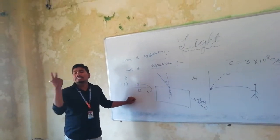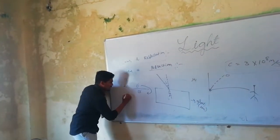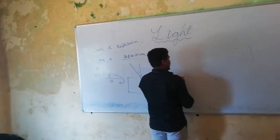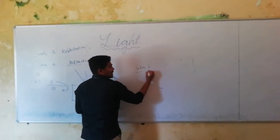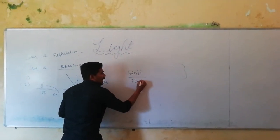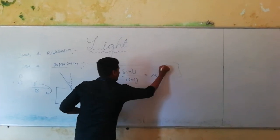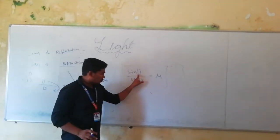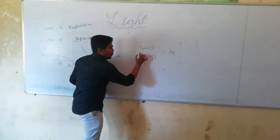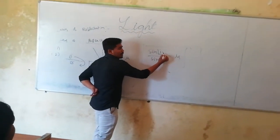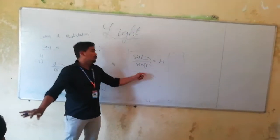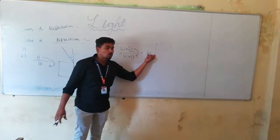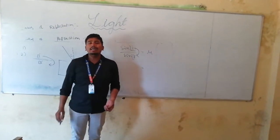This second law has another name — that is Snell's law. Snell's law: sine I by sine R is equal to mu. Mu is nothing but the refractive index. The ratio between the sine of the angle of incidence to the sine of the angle of refraction is called Snell's law, and is equal to mu.